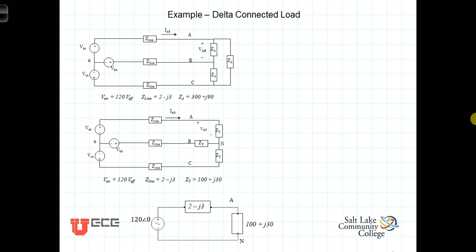In this video, I'd like to show an example of a balanced three-phase system with a Y-connected source and a delta-connected load. We're going to assume an ABC wiring sequence, or a positive wiring sequence, which means that the A phase leads the B phase by 120 degrees and the A phase lags the C phase by 120 degrees.